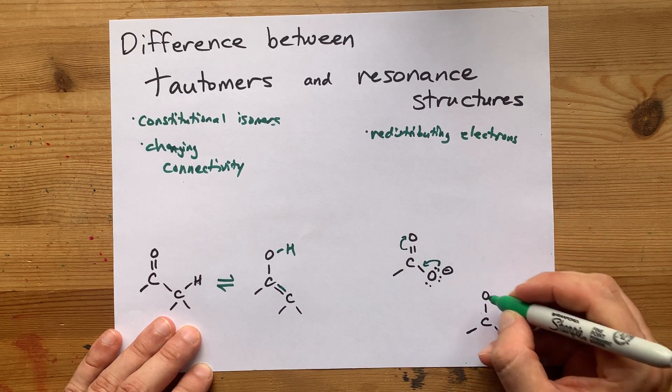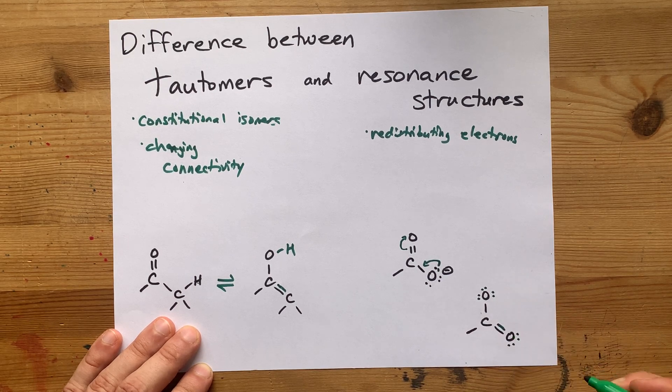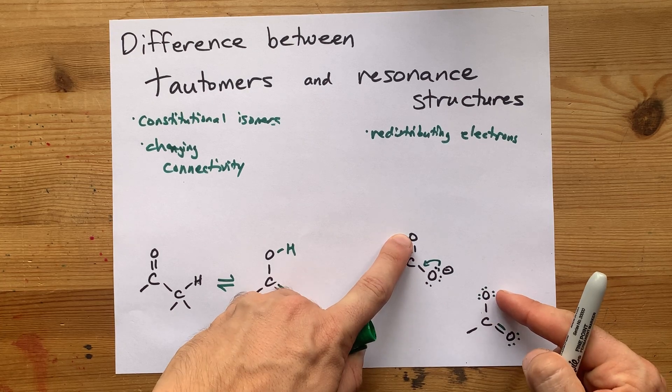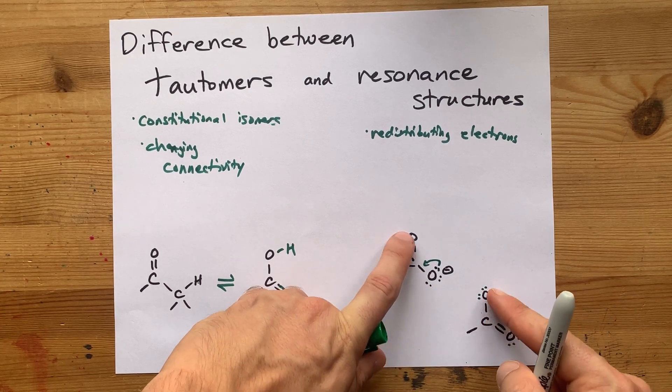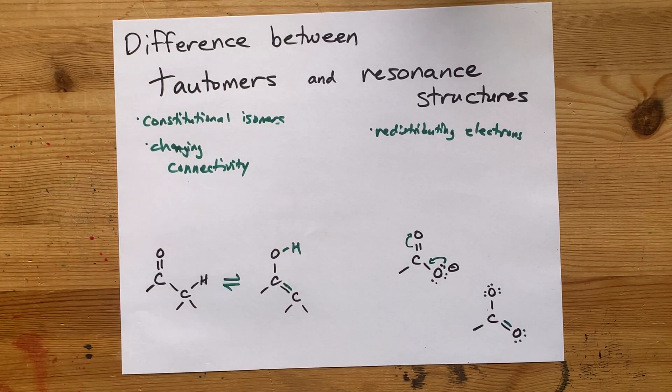You end up with three lone pairs on this oxygen, a double bond here, and only two lone pairs there. But please note, the carbon, oxygen, and oxygen are still connected in the same way. No atoms have been broken off in one place and reattached in another.